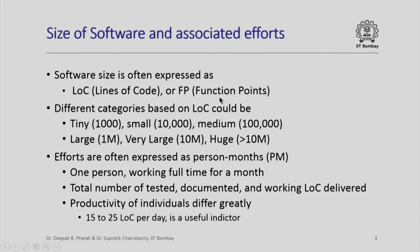Here is typical nomenclature associated with different categories based on lines of code as the size measure. For example, 100 to 1000 lines of code would be regarded as tiny software. Up to 10,000 lines of code could be regarded as small software. Up to 100,000 lines of code could be regarded as medium software. Software which is considered large is actually more than 100,000 lines of code, often extending up to 1 million.